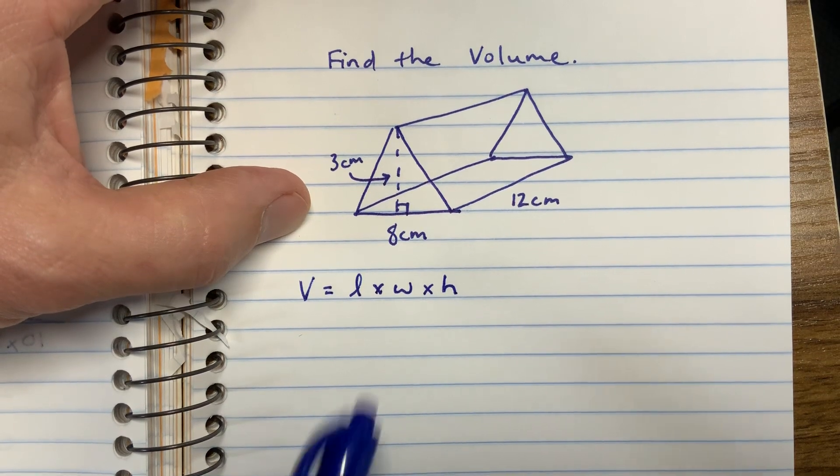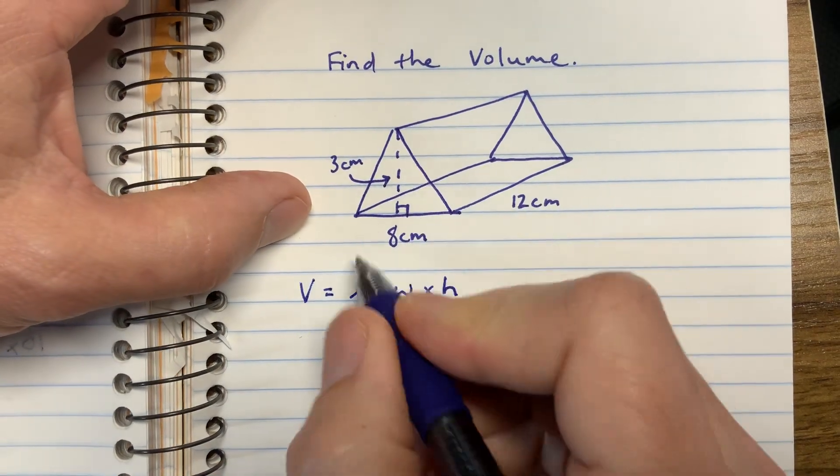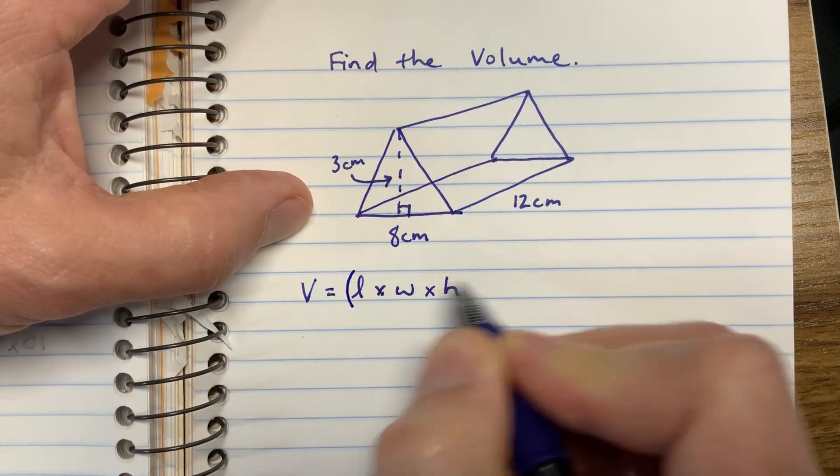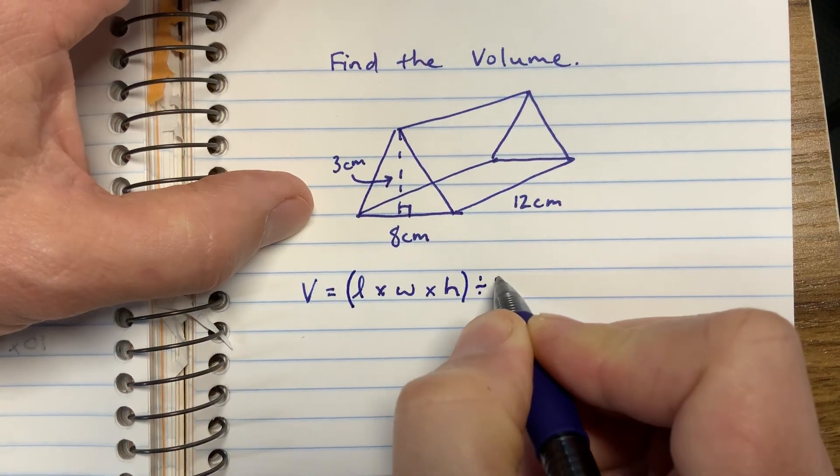Now, when we're changing that to a triangular prism, we're going to take that length, width, and height, and divide all that by two.